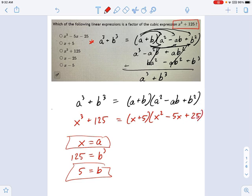So which one of those shows up in our list? There it is, x plus 5 right here. Okay, sometimes it'll be x plus 5. Sometimes it'll be x squared minus 5x plus 25. But if you know this identity, the SOAP identity right here, then you can work through this pretty quickly.